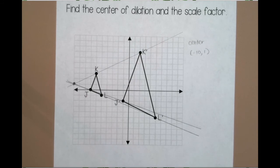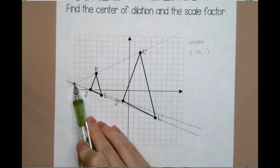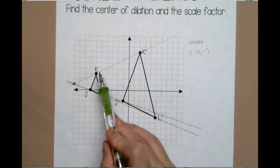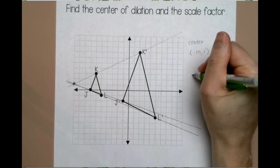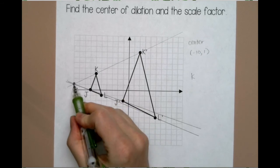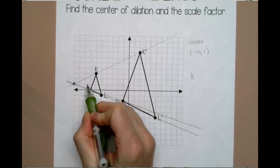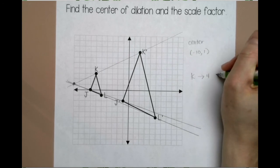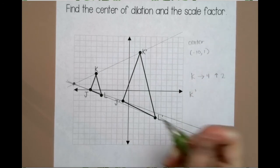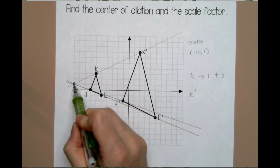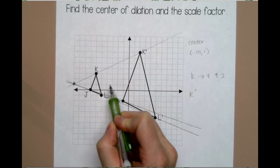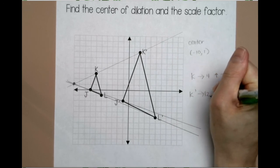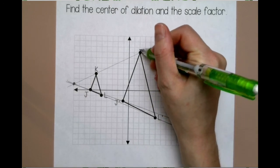For your scale factor, you want to count from the center of dilation to two corresponding points. I'm going to count from my center to K, and then from my center to K prime. So from my center to K is right 1, 2, 3, 4, and up 2. From my center to K prime is right 1, 2, 3, 4, 5, 6, 7, 8, 9, 10, 11, 12, and then up 1, 2, 3, 4, 5, 6.